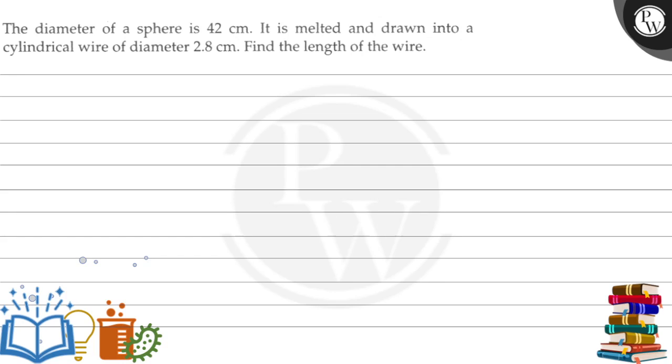Hello, let's read the question. The diameter of a sphere is 42 centimeters. It is melted and drawn into a cylindrical wire of diameter 2.8 centimeters. Find the length of the wire.